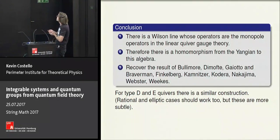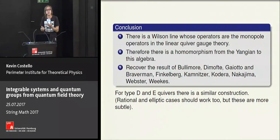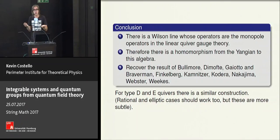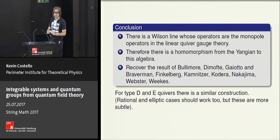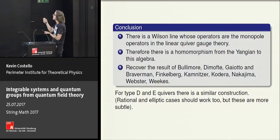It's worth noting that for finite n the algebra is a quotient of the Yangian, but as n goes to infinity it's actually isomorphic to the Yangian for SL(N). The reason is holography: as n goes to infinity, the D3 branes go away and we're just left with the NS5 system in the presence of type IIB.